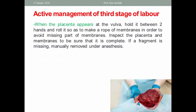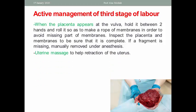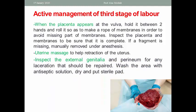When the placenta appears at the vulva, hold it between two hands and rotate it to make a rope of membranes in order to avoid missing parts. Inspect the placenta and membranes to confirm completeness. If a fragment is missing, manual removal under anesthesia is required. Massage the uterus to help retraction, and inspect the external genitalia and perineum for any lacerations that should be repaired. Wash the area with antiseptic solution, dry, and apply a sterile pad.